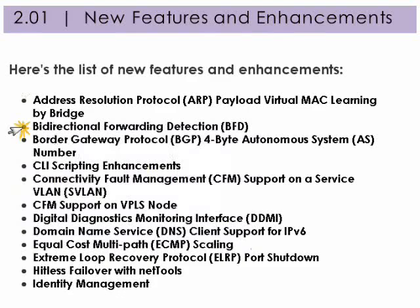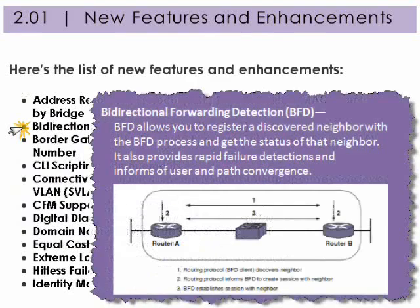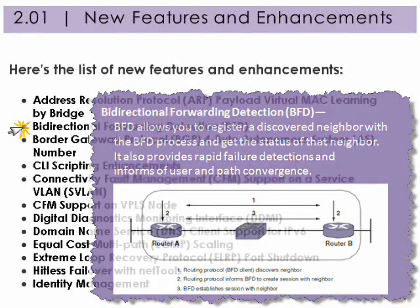Bi-directional Forwarding Detection. BFD allows you to register a discovered neighbor with the BFD process and get the status of that neighbor. It also provides rapid failure detections and informs of user and path convergence.